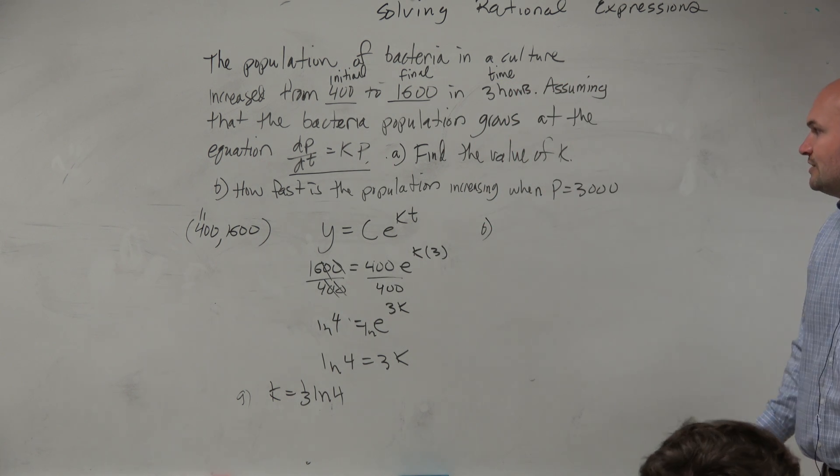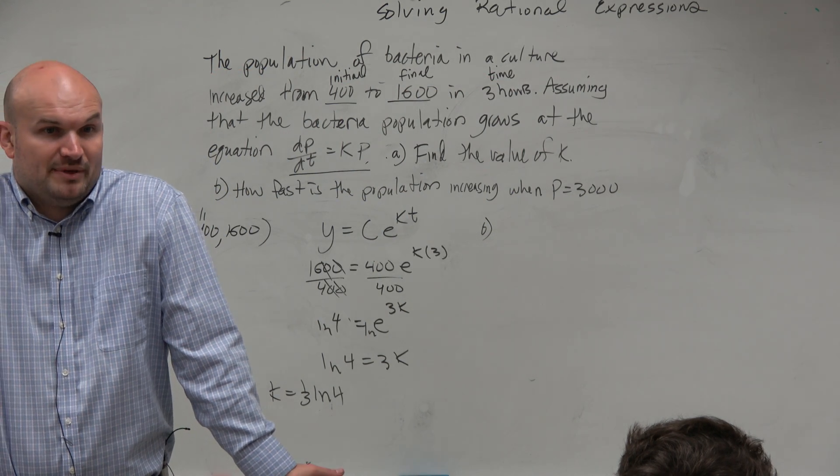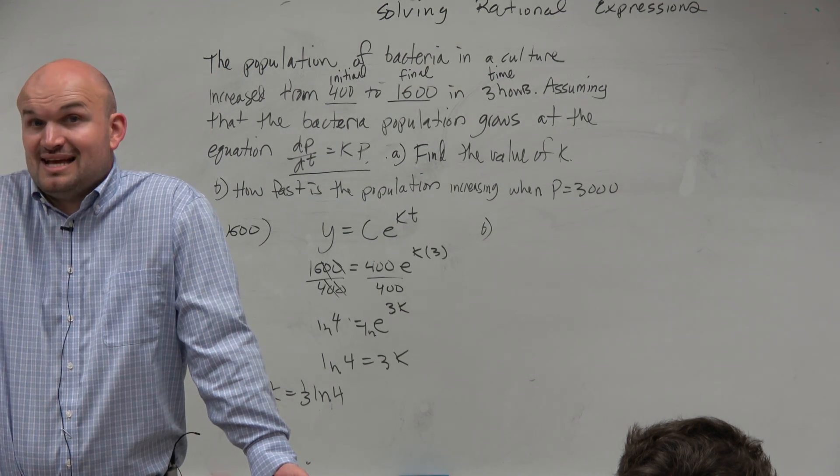And what about b? It says, how fast is the population increasing when the population is equal to 3,000? So what they're saying is, all right, well, we have a population of 3,000. Like, what is k? What is that constant?